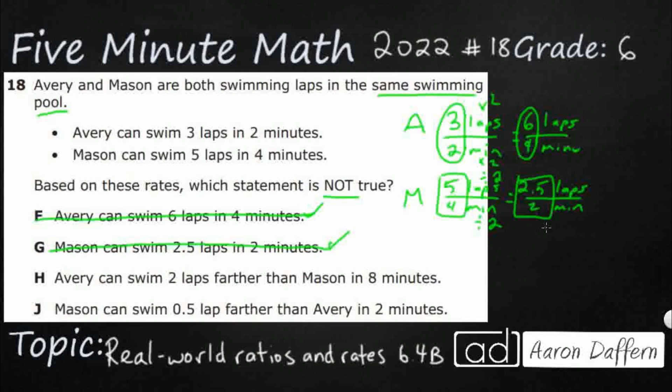Avery can swim 2 laps farther than Mason in 8 minutes. We need to get both of these denominators into 8 minutes. So that's going to be times 4. So 8 minutes. Times 4, I'm timesing by the original, that's 12 laps.